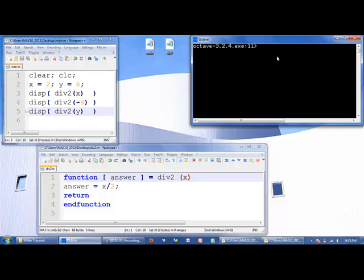We want to execute the main program, so at the command line we type main. We don't type the name of the function. And indeed we see 1, negative 4, and 3.